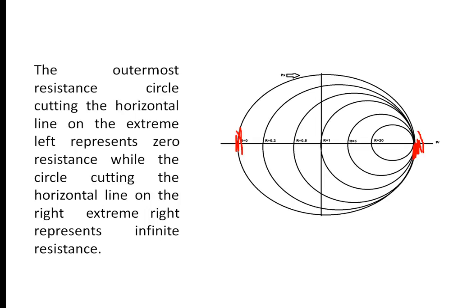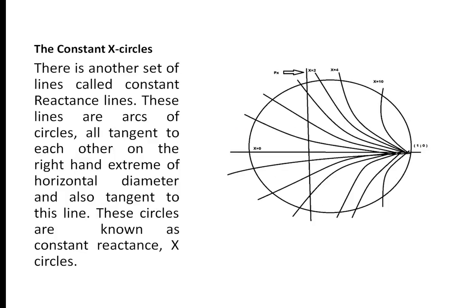So infinite resistance decreases toward zero resistance here. Zero resistance means the current will be very high — you can imagine whether it will be a short circuit or open circuit side. We will discuss this in coming video lectures. There is another set of lines called reactance lines. These lines are arcs of circles all tangent to each other on the right-hand extreme of the horizontal diameter and also tangent to this line. These circles are known as constant reactance circles.